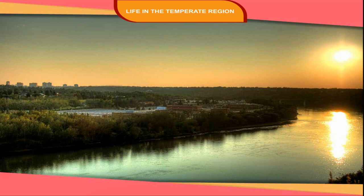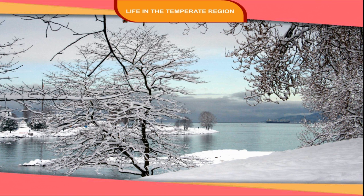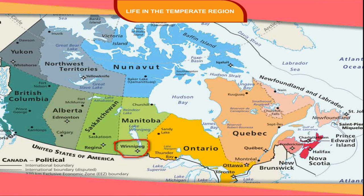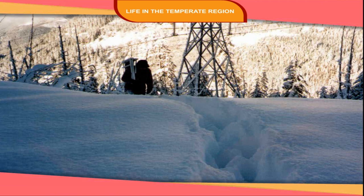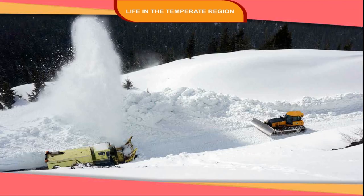The region experiences a continental type of climate with extreme temperatures. The summers are warm with temperatures around 20 degrees Celsius, whereas in winters the temperature is as low as minus 20 degrees Celsius, as recorded at Winnipeg in Canada. A thick blanket of snow covers the region in winters. The annual rainfall is moderate, which is ideal for the growth of grass. Most of the rainfall takes place in spring and summer, usually in the form of light showers.